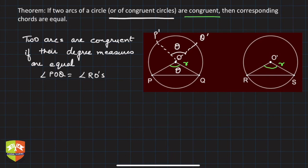Now let's try to understand what this theorem is talking about. It says that if arc PQ equals arc RS, then chord PQ—that is this side PQ—is equal to chord RS. That's what we have to prove.